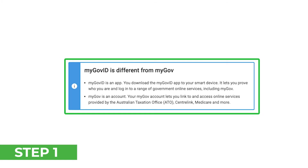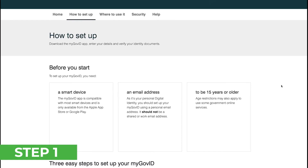Step one is ensuring that you have a myGovID. Note that myGovID is different from myGov. myGovID is an app you download onto your smart device, and it lets you prove who you are and log into a range of government services including myGov. Your myGov account lets you link and access online services provided by the ATO, Centrelink, Medicare, and more. You can essentially think of your myGovID as your key into your government accounts. If you already have a myGovID, you can skip to step two.